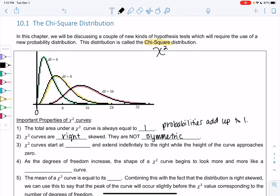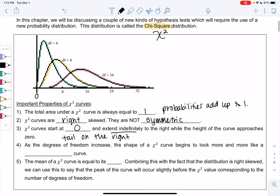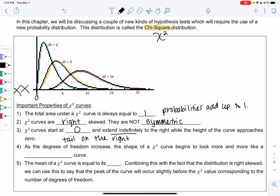So they start at 0 and extend indefinitely to the right while the height of the curve approaches 0. So this is telling us there's a tail on the right only, versus the normal curve which had a tail on both sides. So this one doesn't go to any negative numbers. Since it doesn't go over here, there's no negative infinity, no negative numbers.